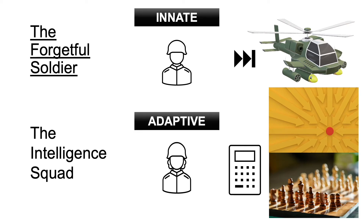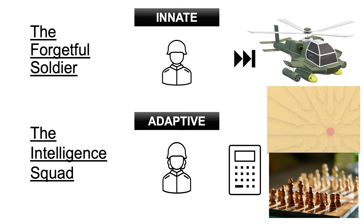Your adaptive immunity, on the other hand, is far more specialised — almost like an intelligence unit of the military. Their fighting skills are far more specific, far more targeted at specific foreign invaders. They take time to respond as they are far more calculated, planning every step as they go.